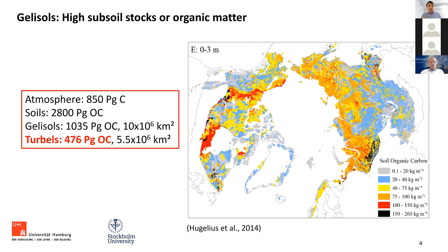There is strong warming in this region, and at the same time there is a lot of organic matter stored in these permafrost-affected soils. You see here the map published by Gustav and colleagues in 2014 — still a very important map showing the organic carbon content in these soils. For comparison: the atmosphere stores about 850 petagrams of carbon, all soils together probably 2,800 petagrams of organic carbon, and in these permafrost-affected soils we have about 1,000 petagrams of organic carbon. This is a huge area with a lot of organic carbon.